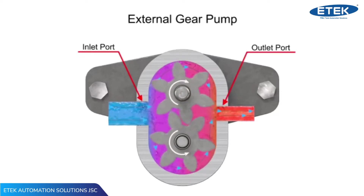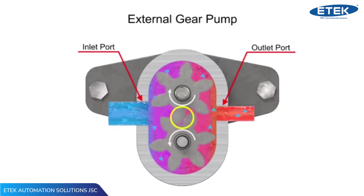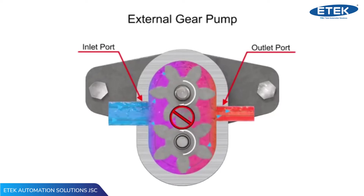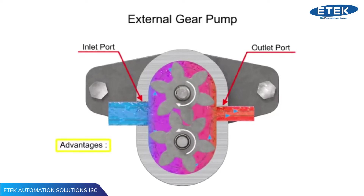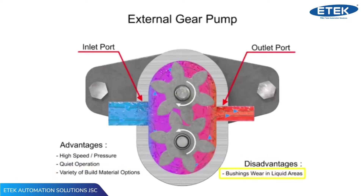Meshing of the teeth in the center of the pump seals the outlet port from the inlet port. No fluid passes between the gears. The advantages of external gear pumps are their high speed and pressure, relatively quiet operation, and that their design accommodates a wide variety of materials. Disadvantages include bushings in the liquid area can become worn, and that they have fixed end clearances.